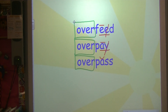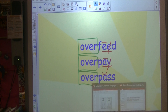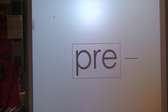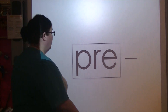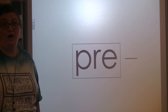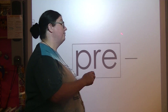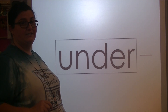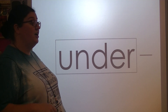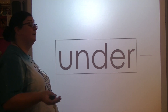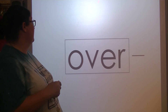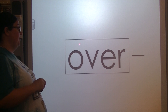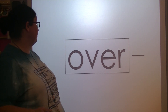Let's look at your new cards. Your first card today: prefix 'pre' means before. Pre-kindergarten means before kindergarten. Pre means before. Next: prefix 'under' means not enough or below. If something is underfed, it means not enough food — or it can mean below. Prefix 'over' can mean too much or it can mean above. So if you overpay, you pay too much.